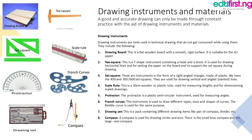Number five: protractor. This is a plastic semi-circle instrument used for measuring angles, just like the one we have in our mathematical set. Number six: French curve. This instrument is used to draw different lines, sizes, and shapes of curves. There is also a flexible curve used for the same purpose. From the name it is clear that it is used for drawing different curves, and it is a major tool used in technical drawing.